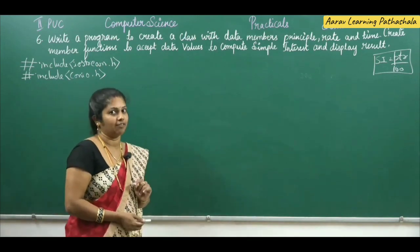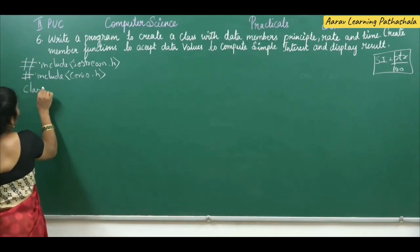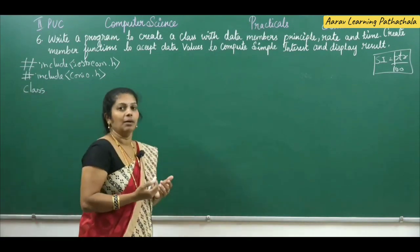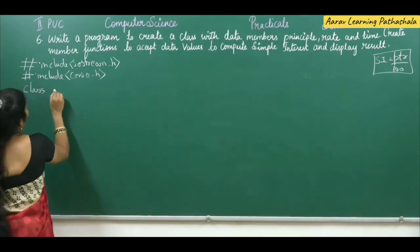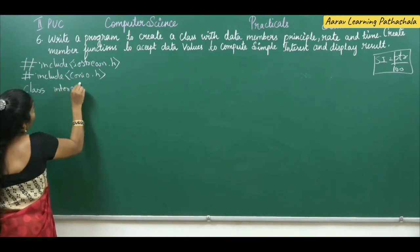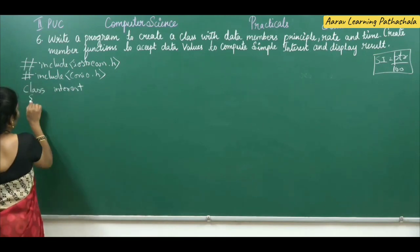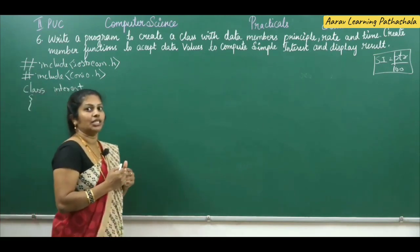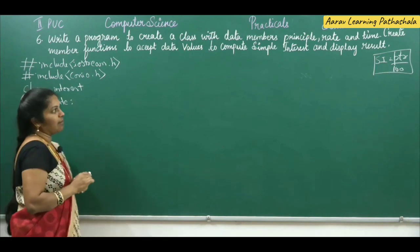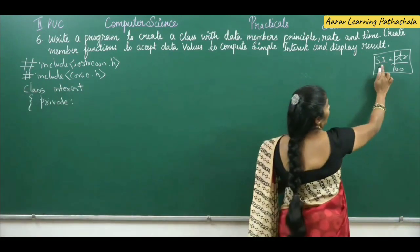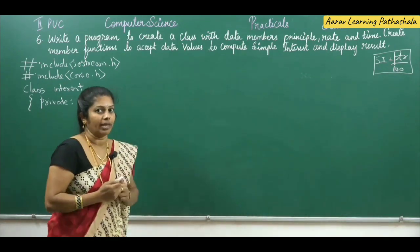Now we will start with the class. Here we want to find simple interest for the given principal amount, rate, and time. The class name we are giving is 'interest'. In the private section, we declare the variables. Which variables do we require? To find simple interest we need P, T, and R.